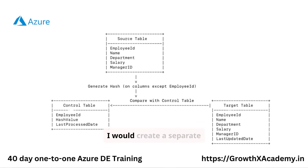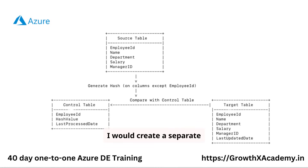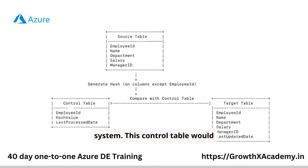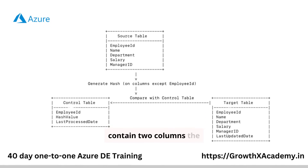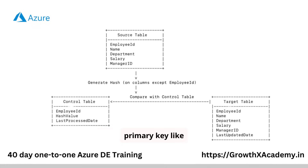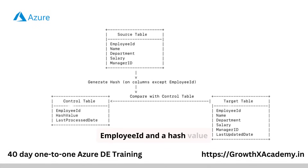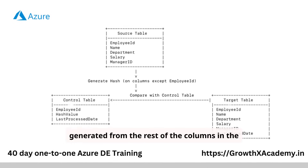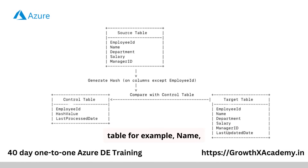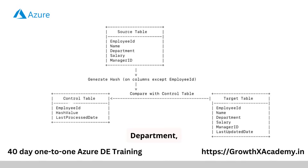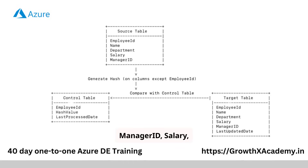I would create a separate control table in the target system. This control table would contain two columns: the primary key like employee ID, and a hash value generated from the rest of the columns in the table — for example, name, department, manager ID, salary, etc.